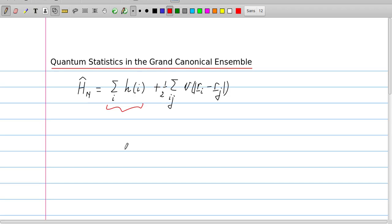But the grand canonical ensemble says that we do not fix the number of particles. So what do we do?